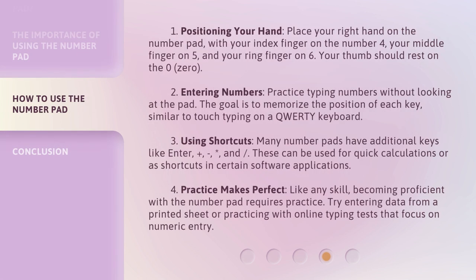1. Positioning your hand: Place your right hand on the number pad, with your index finger on the number 4, your middle finger on 5, and your ring finger on 6. Your thumb should rest on the 0. 2. Entering numbers: Practice typing numbers without looking at the pad. The goal is to memorize the position of each key, similar to touch typing on a QWERTY keyboard.